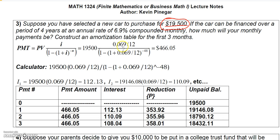We put in nineteen thousand five hundred for the present value. The rate per period, I, is 0.069 divided by 12. In the denominator we have one minus (one plus I) raised to the negative n, where n is 48 — because it's four years monthly, so four times twelve gives 48 months. Plug this into your calculator and you should get a monthly payment of $466.05.